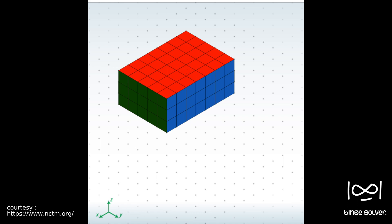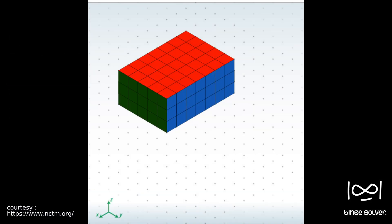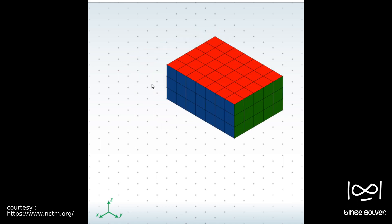The second part of the question asks about exactly six small cubes with exactly two faces: one painted blue and the other green. From the visual tool, the transparent cube and the one on the other side are the cubes with two sides painted — one blue and one green. Rotating the cube to another corner, we can see some cubes painted blue and red instead. So there are only four such cubes with exactly two faces painted one blue and one green — so statement two is wrong.